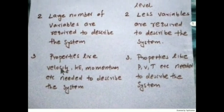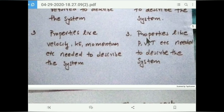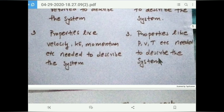The next difference concerns the properties used to describe the system. In the statistical approach, properties like velocity, kinetic energy, and momentum of each molecule are needed, since each molecule is considered as a separate entity. In the classical approach, properties like pressure, volume, and temperature are used to describe the system.